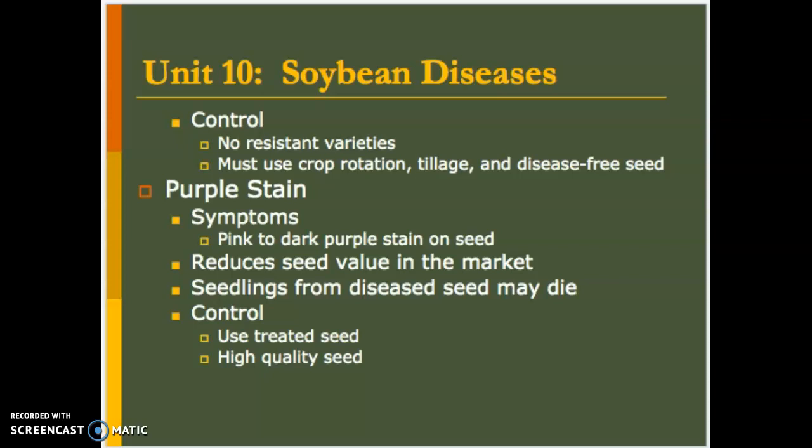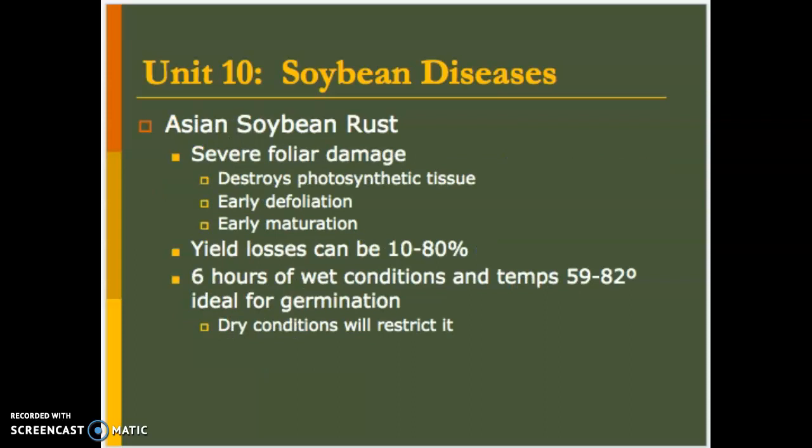Next is purple stain, and most of you who have handled soybeans have probably seen it — it's either pink to dark purple stain on the seed. Generally it reduces seed value in the market. It doesn't cause yield loss that appears statistically significant, but it just looks bad when a grain grader gets a sample at the elevator. You could see some diseased seedlings die, and there's some effect on germination rate, but in terms of total yield, great big yield losses are not common.